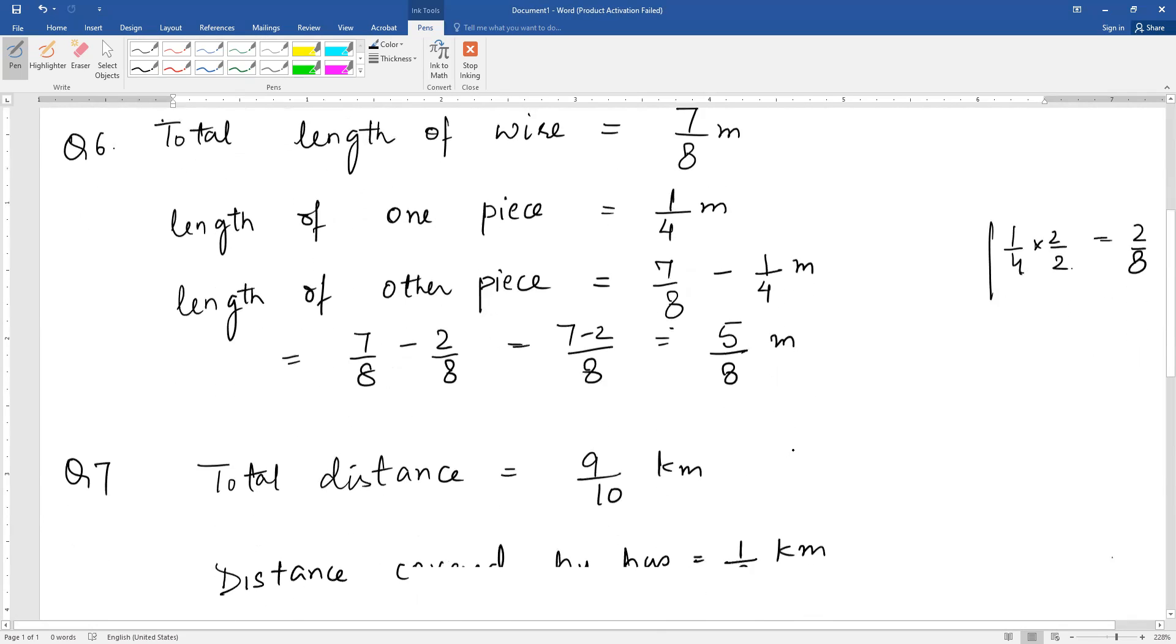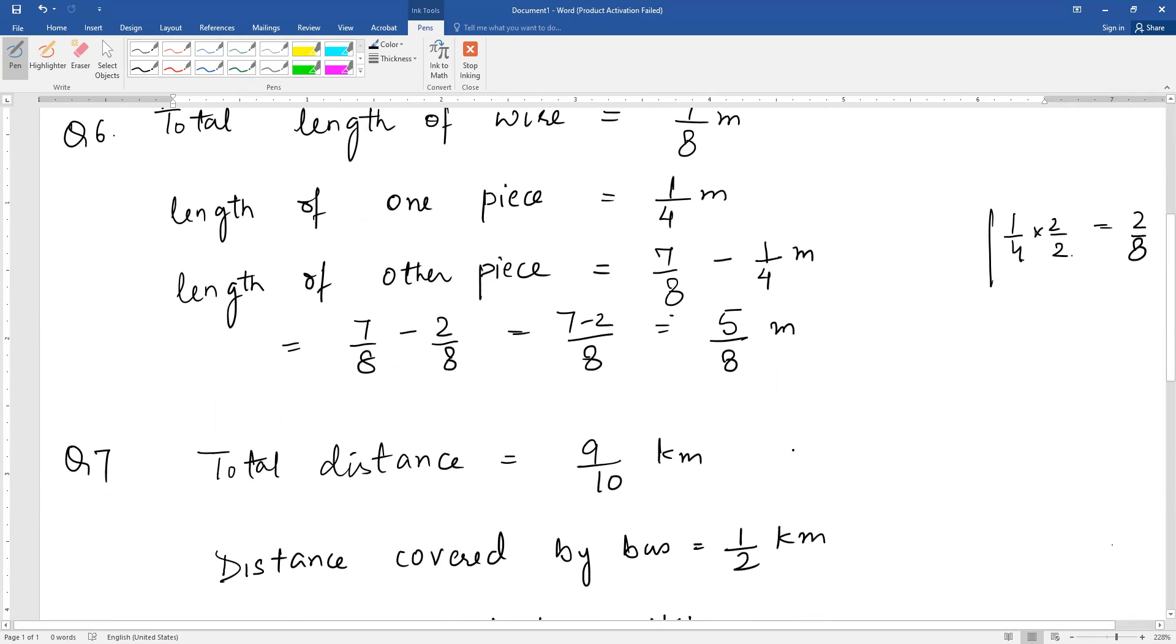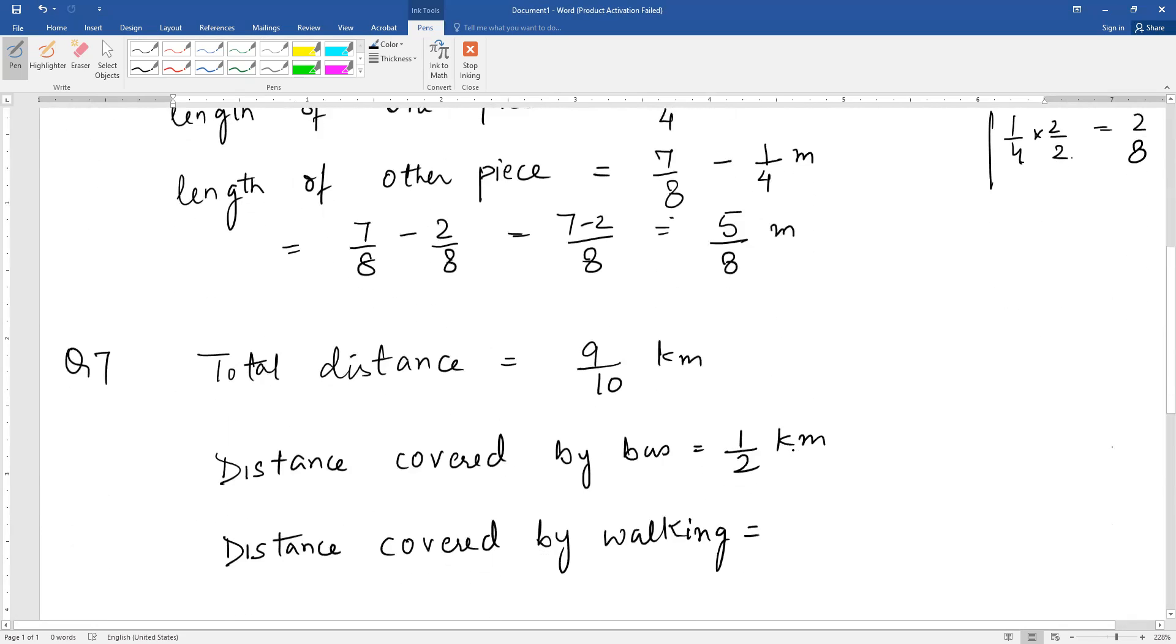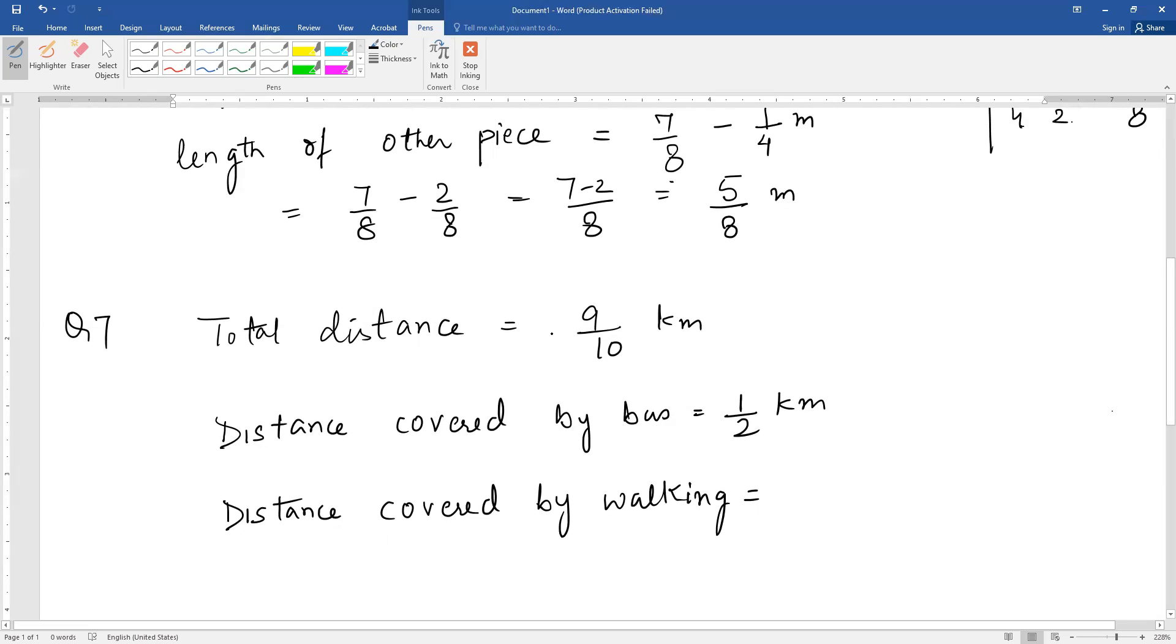Next question: Nandini's house is 9/10 kilometers from the school. She walked some distance, then she took a bus for 1/2 kilometers to reach the school. Distance covered by bus is 1/2 km.